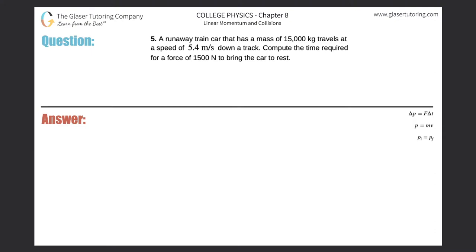Number five: A runaway train car that has a mass of 15,000 kilograms travels at a speed of 5.4 meters per second down a track. Compute the time required for a force of 1500 Newtons to bring the car to rest. All right, so we're given force, we need to calculate time, and they're giving us mass and velocity.